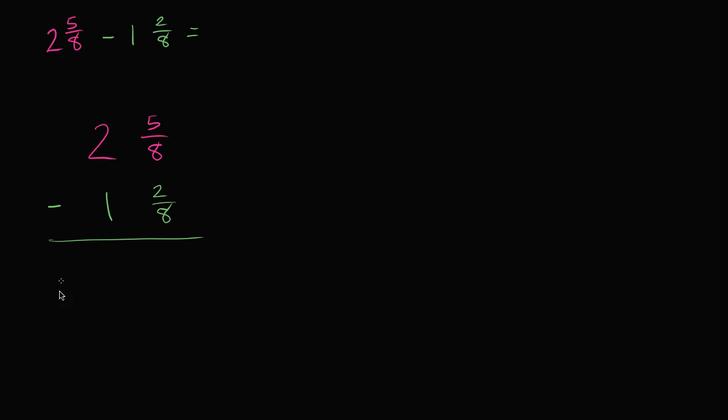And then we can subtract. In this column right over here we are subtracting eighths. We have 5 eighths and we're going to subtract 2 eighths. If I have 5 of something and I subtract 2 of them, I'm going to have 3 of that something. In this case, we're talking about eighths. So 5 eighths minus 2 eighths is 3 eighths. And then you have 2 ones minus 1 one, or 2 minus 1 is 1. So this equals 1 and 3 eighths.